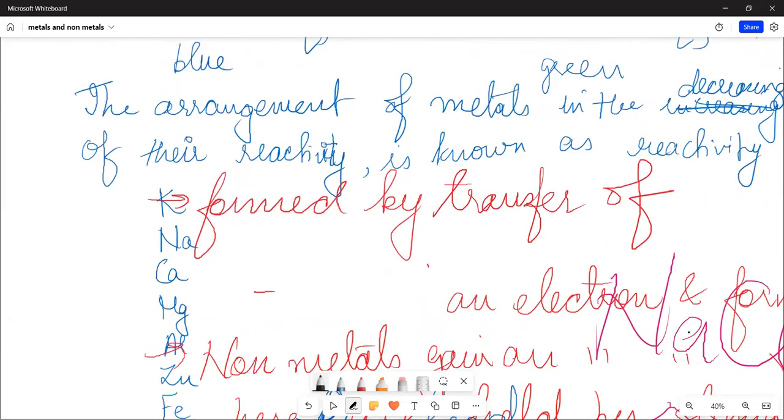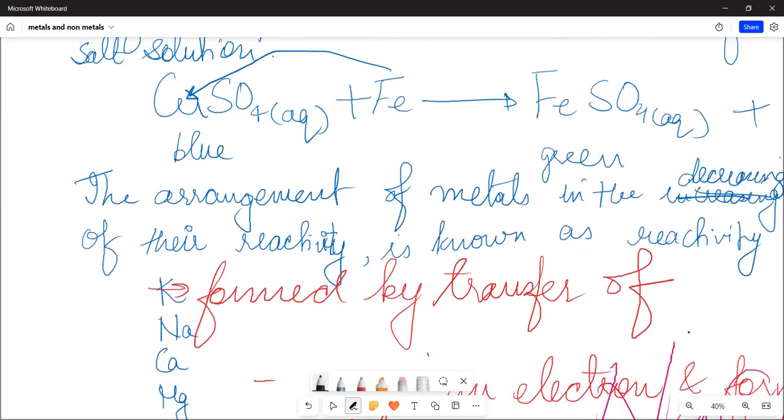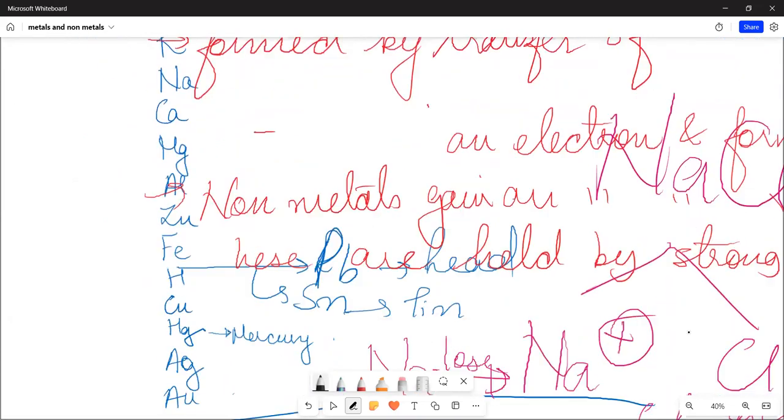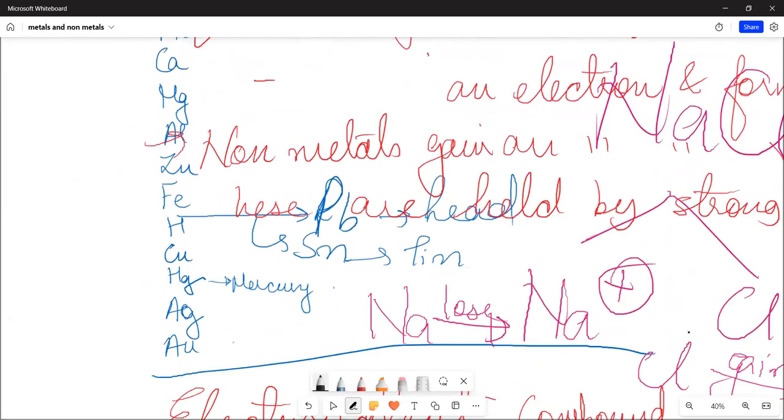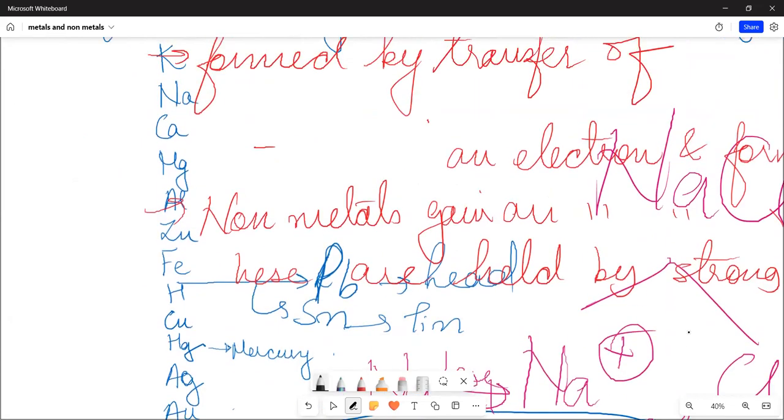Reactivity series: we have written potassium first, then sodium, calcium, aluminum, zinc, iron, hydrogen, copper, mercury, silver, tin, lead. Here, the first part of your chapter is finished.